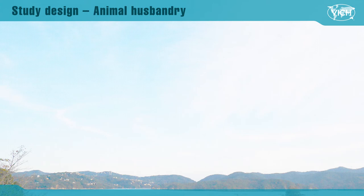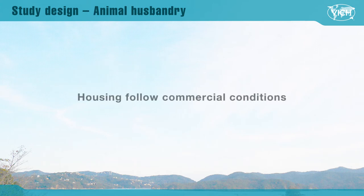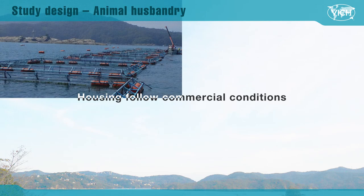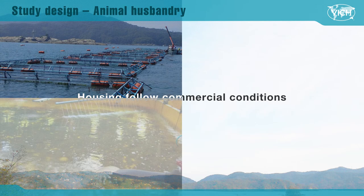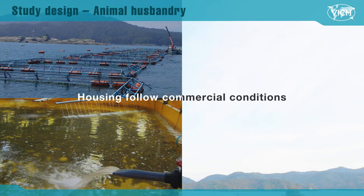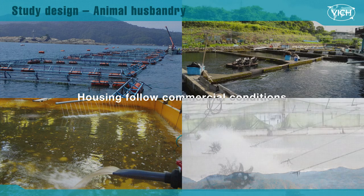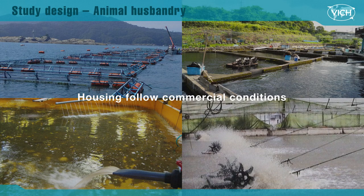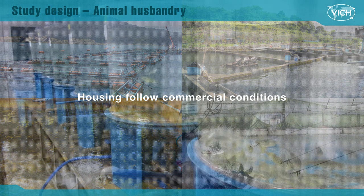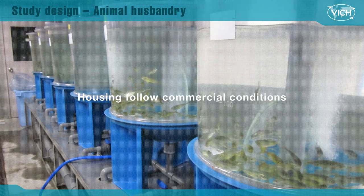Normal commercial husbandry practices must be followed as much as possible. Housing conditions include flow-through cages, racks, net pens, recirculating water systems, and/or ponds. In each case, the study site setting should be suitable to prevent test animal escape as well as the entry of predators. For residue study purposes, it might be necessary to conduct the study under controlled environment conditions in a laboratory setting, and in such cases, the housing condition should mimic the commercial setting as much as possible.